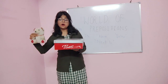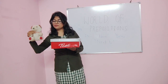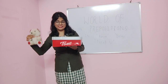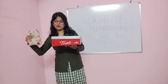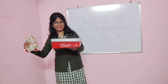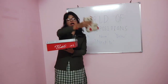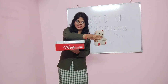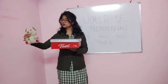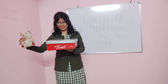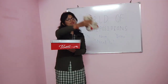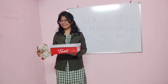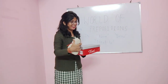Now where is the teddy? Teddy is next to the box. It is next to the box on the right. And now it is next to the box on the left. Next to the box on the right; next to the box on the left.